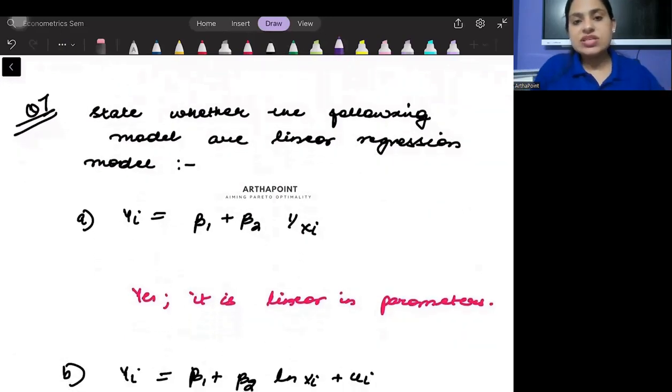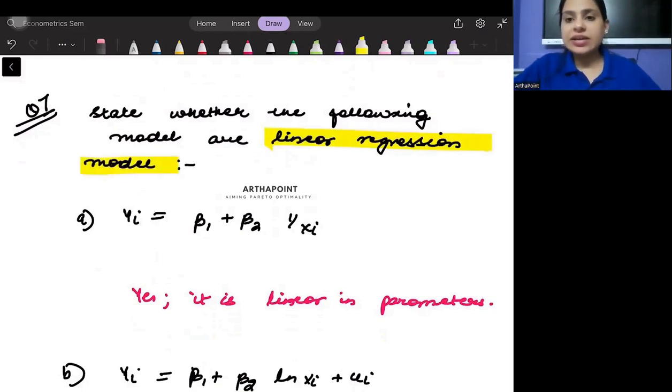Okay, we will look into the next question. State whether the following models are linear regression or not. So linearity in regression always means linearity in parameter. Remember, it does not mean linearity in variables. So if a variable is non-linear, we just want to look into linearity of parameters.